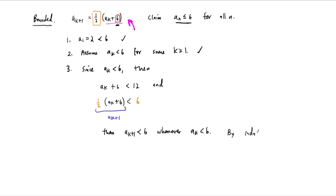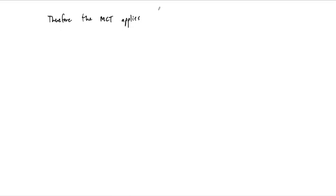And we know a sub k is less than 6 when k equals 1. So by induction, our sequence is always less than 6. By induction, a sub n is always less than or equal to 6. All of this means, by our two induction proofs, the monotone convergence theorem applies. All we needed to show was that our sequence was both monotone — in this case increasing — and bounded — in this case bounded above. Thus, it has a limit.